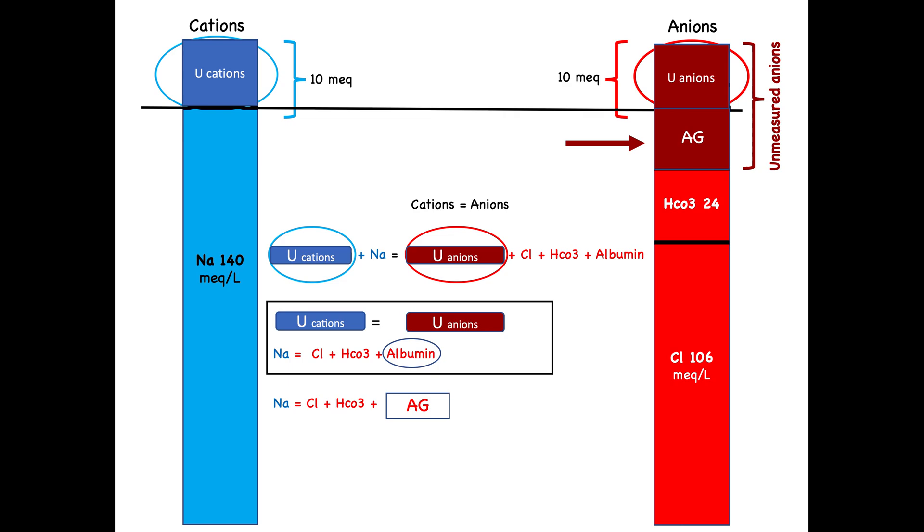From this diagram, you can tell that the anion gap is equal to sodium minus bicarb and chloride. And from this diagram also, you can tell that the anion gap is equal to the unmeasured anions minus unmeasured cation. These two equations are the final equations.